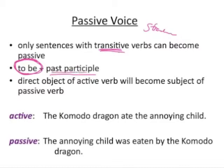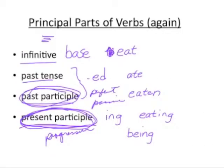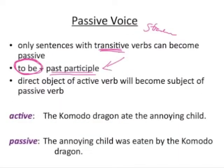The formula for the passive voice is 'to be' as the auxiliary plus the past participle. Remember: we used the past participle with 'have' as an auxiliary to form the perfect tenses, but if we use the past participle with 'be' as an auxiliary we get the passive voice. The direct object of the active verb is going to become the subject of the passive verb.